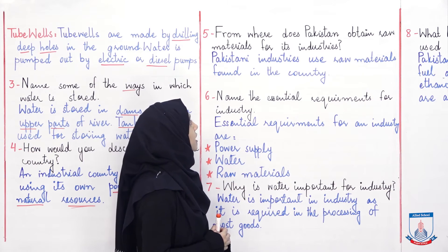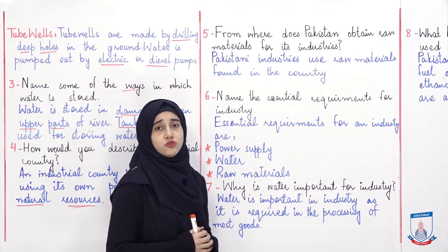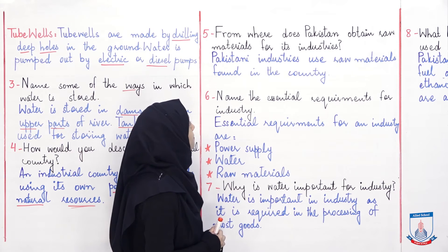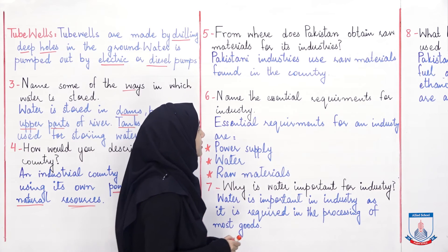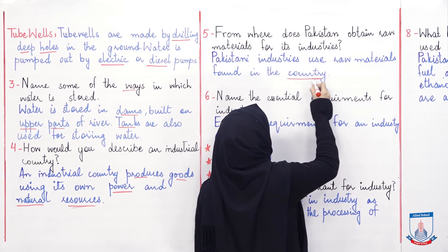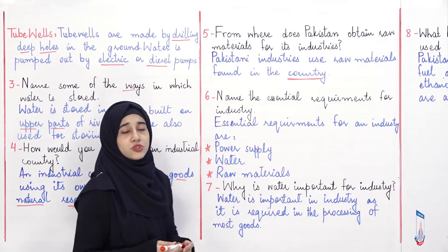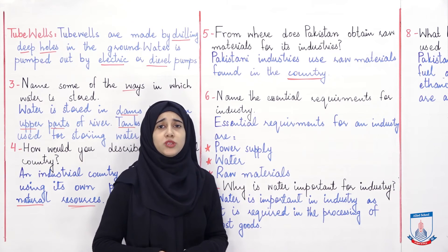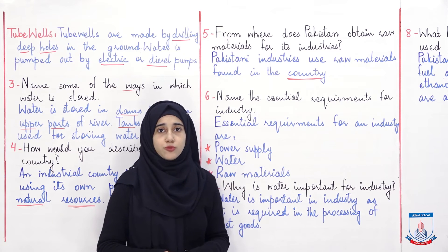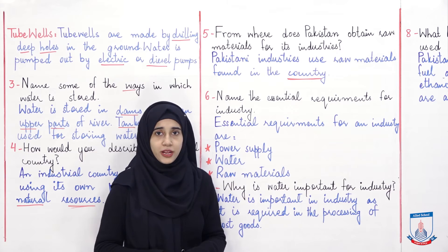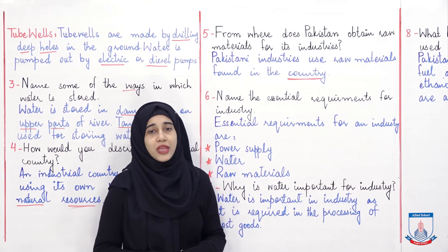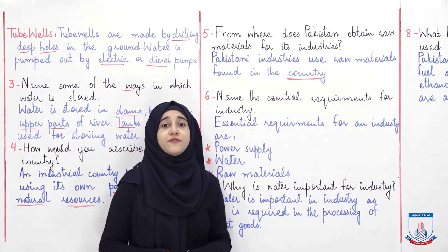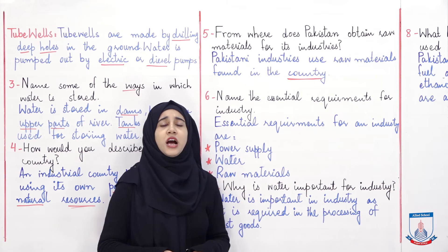Question five: from where does Pakistan obtain raw materials for its industries? Ab woh aap se pooch raha hai ke Pakistan apni industries ke liye raw materials kahan se leta hai. So Pakistani industries use raw materials found in the country. Pakistan apni industries ke liye woh raw materials use karta hai joh ke hamari apni country mein maujood hain. Yeh ek bohat hi achhi baat hai.